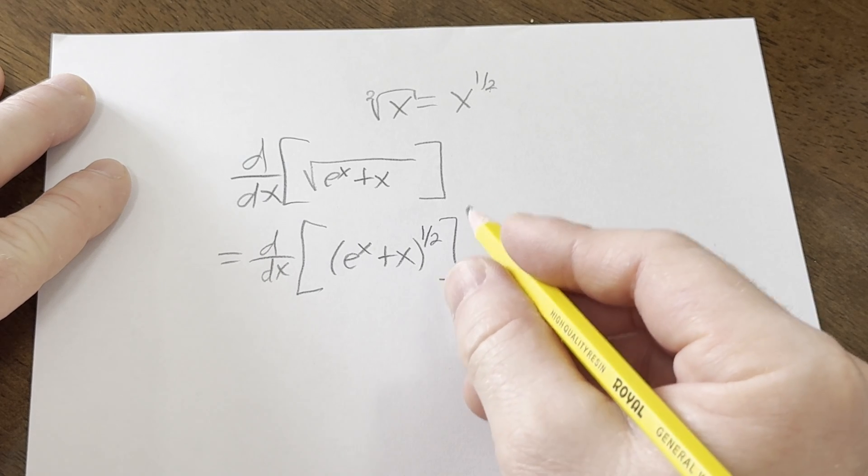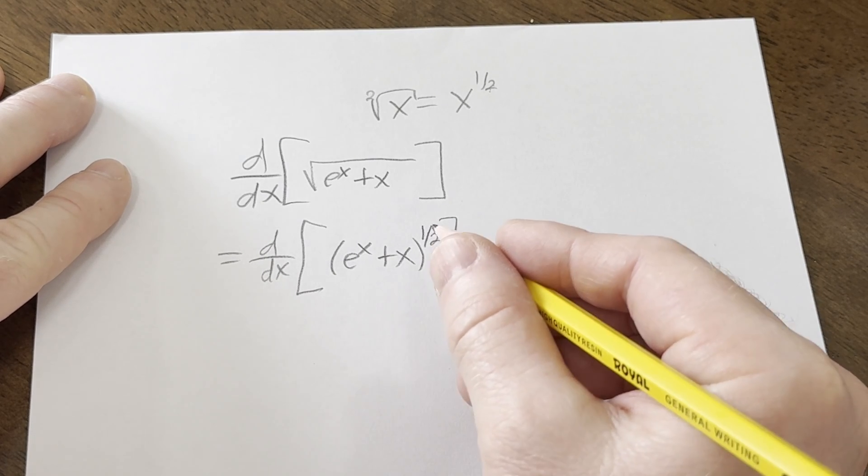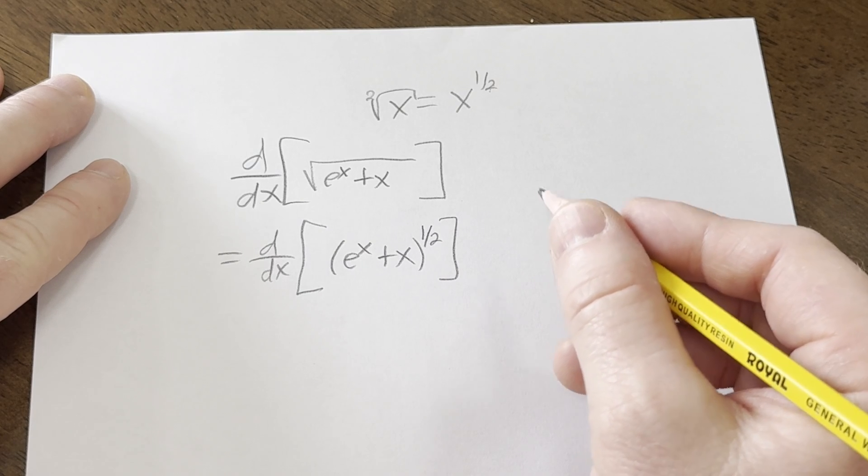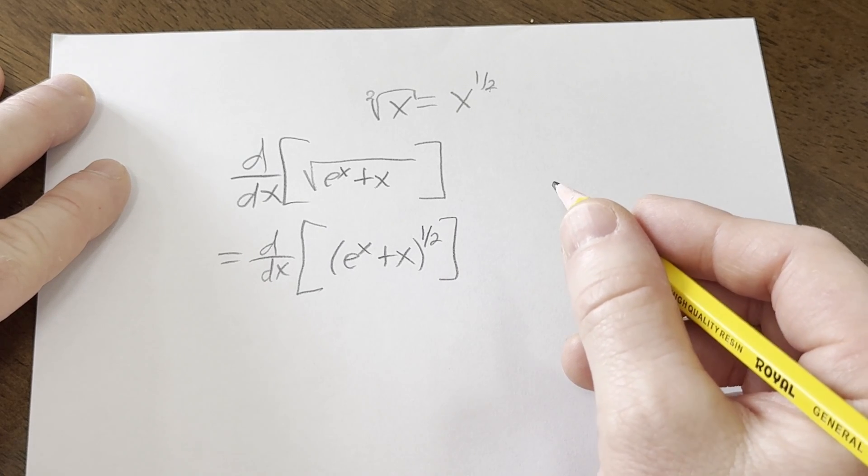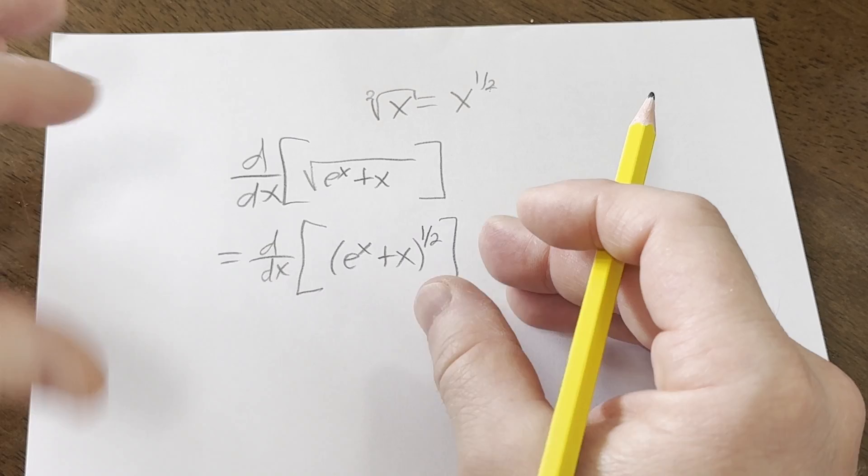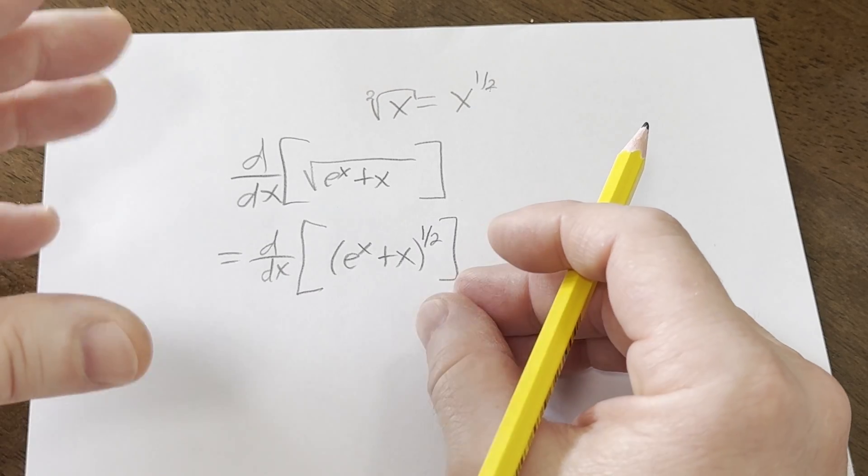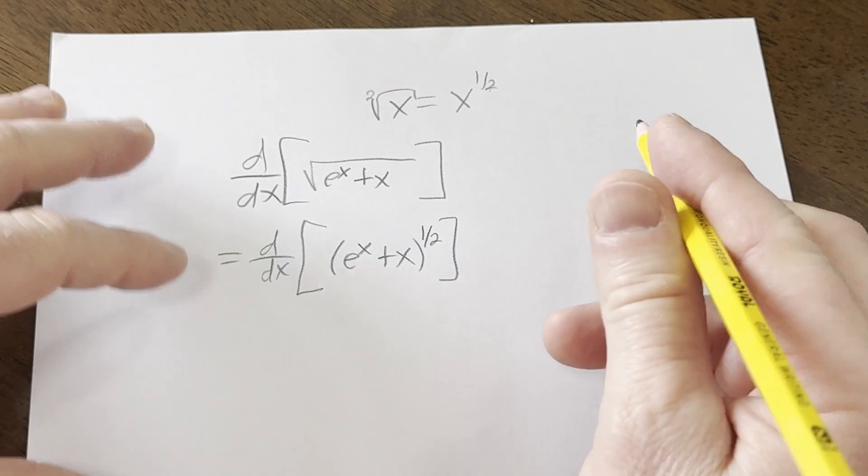Now this is the derivative of a composition of functions. Whenever you have the derivative of a composition, you can use something called the chain rule. The chain rule says you take the derivative of the outside, you leave it evaluated at the inside, and then you multiply by the derivative of the inside.